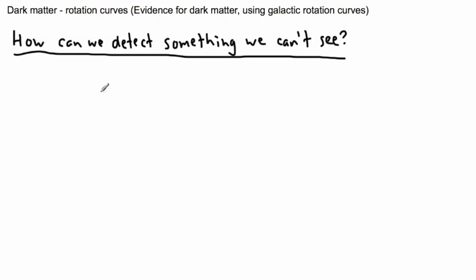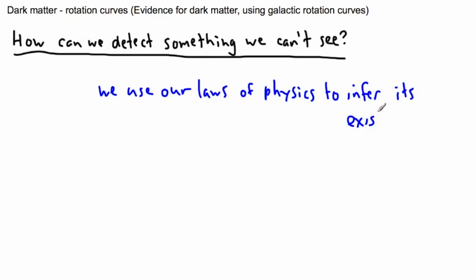Well, the trick is here that we use our laws of physics to infer. So again, like what we were doing before, we're going to infer its existence. We're going to use things that seem logical, things that we understand, and we're going to try to infer the existence of dark matter.